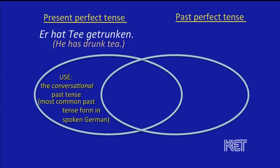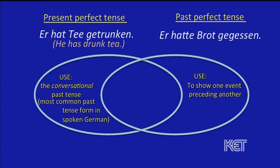Now the past perfect tense — its use is when one event precedes another, to show one event preceding the other. For example, 'Er hatte Brot gegessen' — 'He had eaten bread.' The past perfect is exactly the same in English: it tells us when something precedes another event. The sentence in the past perfect came before the other one in time. So the past perfect tense tells us it came earlier.